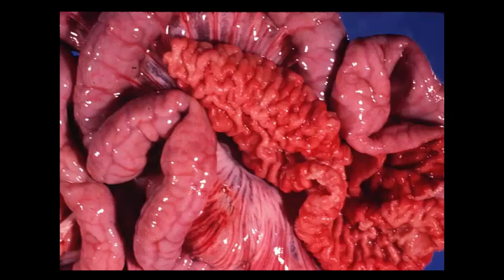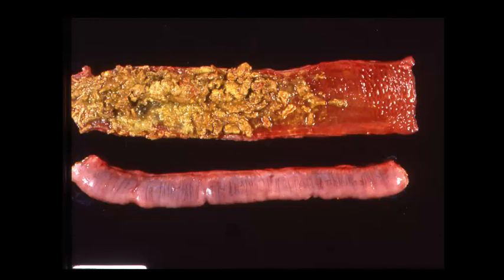Histologically, you'll see long, tortuous crypts with epithelial hyperplasia and mitotic figures at all levels of the crypt. A number of the enterocytes will also be degenerating or necrotic.